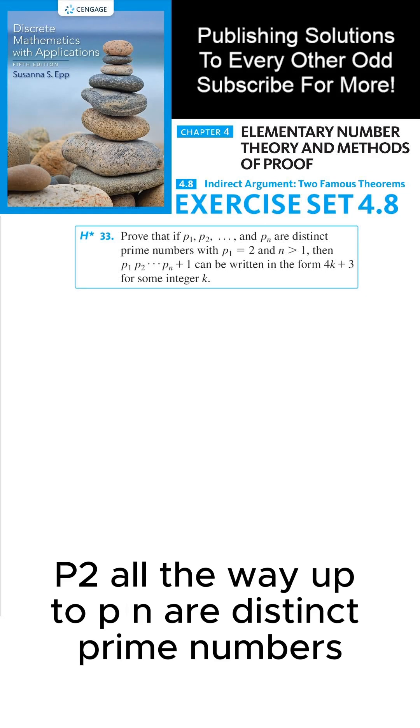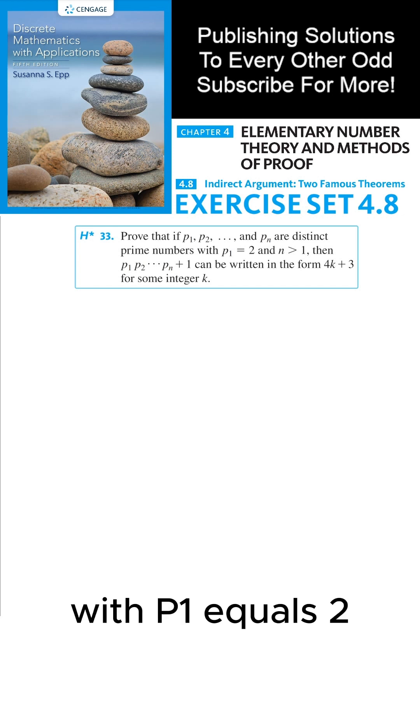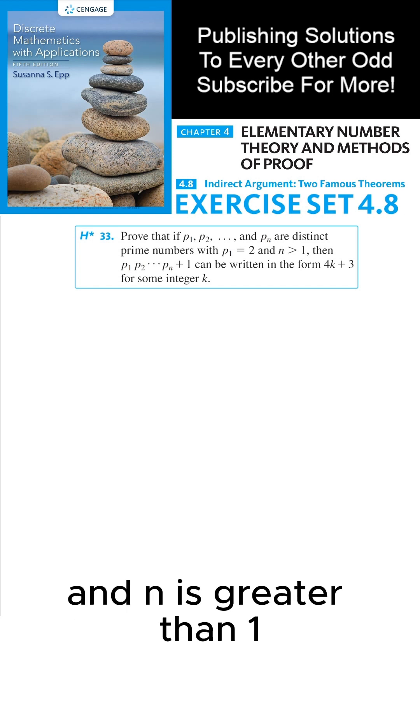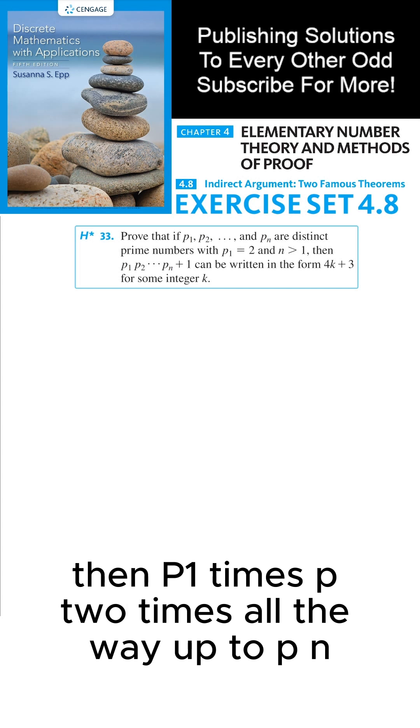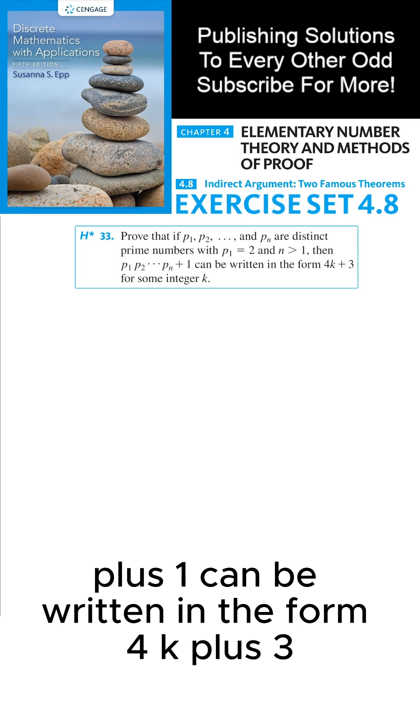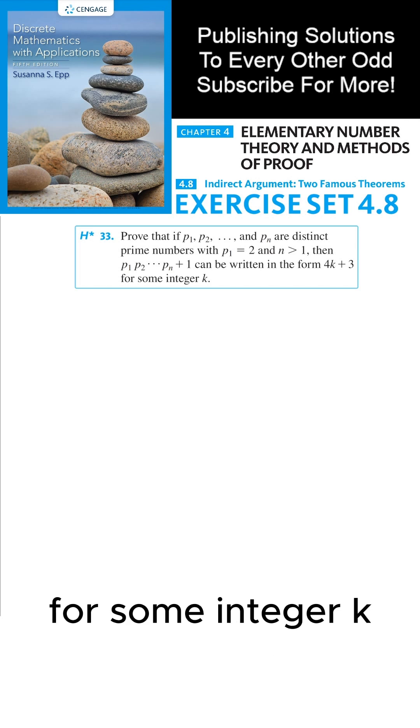Prove that if p₁, p₂, all the way up to pₙ are distinct prime numbers, with p₁ equals 2 and n is greater than 1, then p₁ times p₂ times all the way up to pₙ plus 1 can be written in the form 4k plus 3 for some integer k.